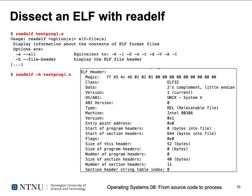Calling readelf -h testproc1.o gives output showing the ELF header: the first 16 bytes of the ELF magic including the 0x7F ELF bytes, the decoded ELF class (ELF32), data encoding (little-endian two's complement), version 1, OS/ABI (Unix System V), and importantly it's a relocatable file — that's expected because this is an object file. It's compiled for Intel 386. All this detailed information is used by the operating system and linker to process the object file further.